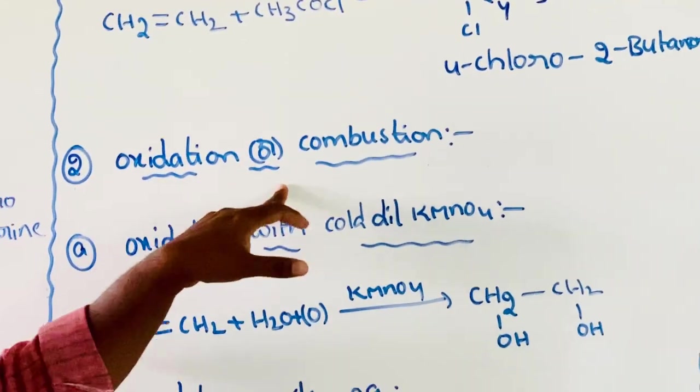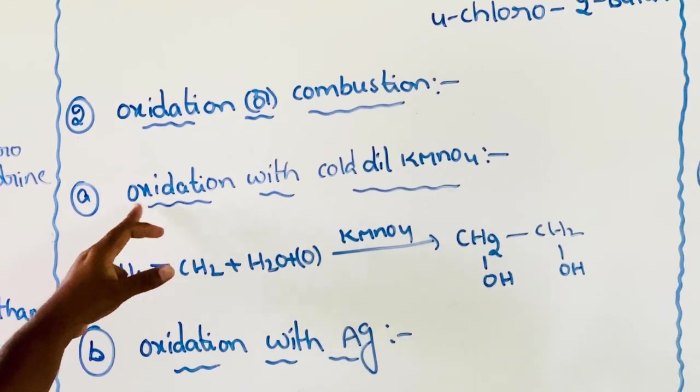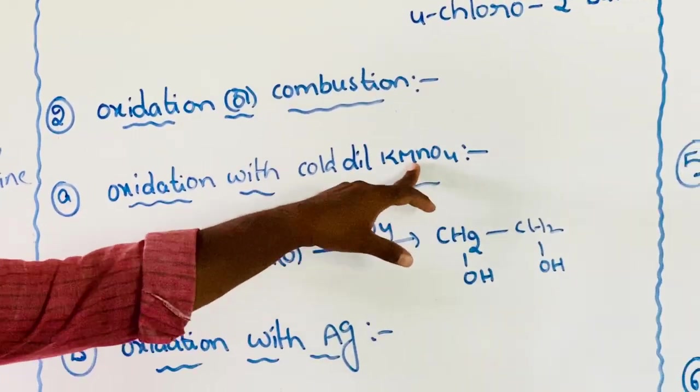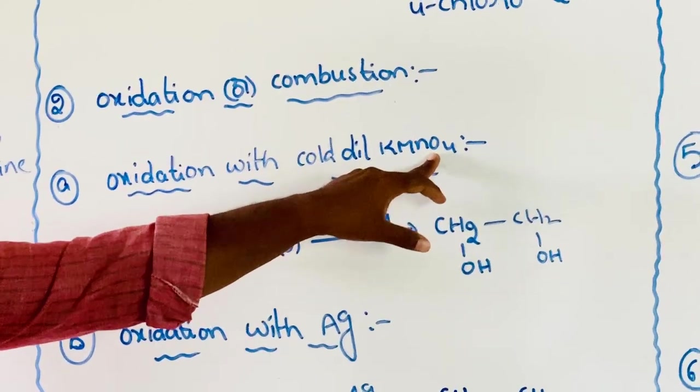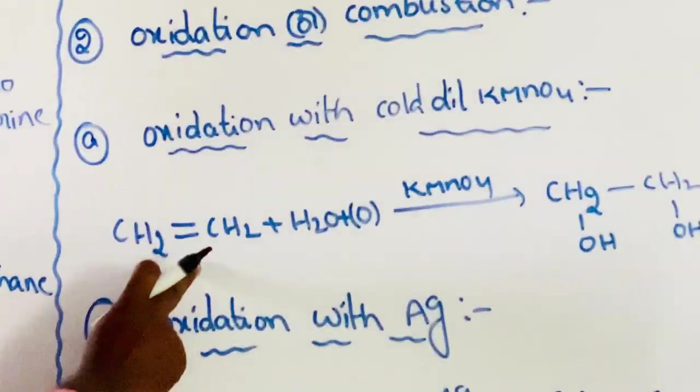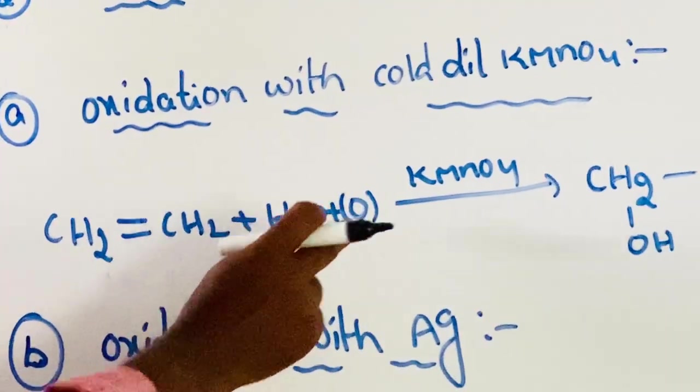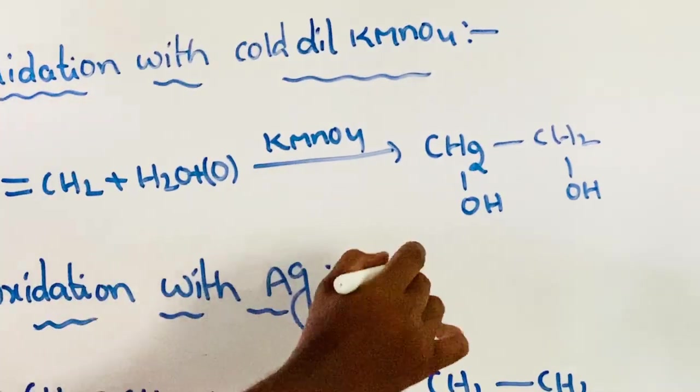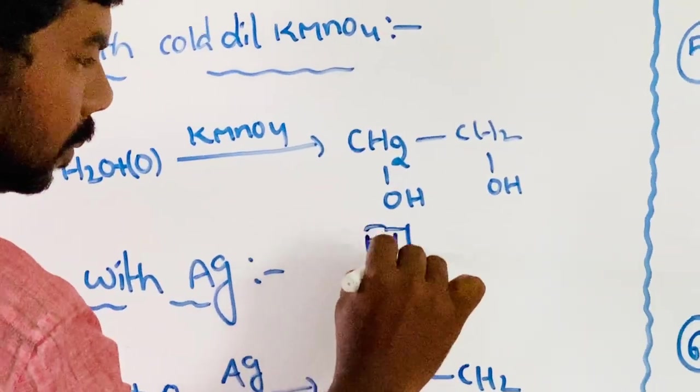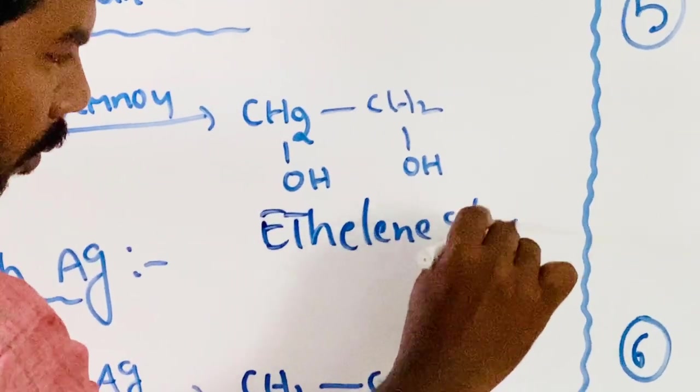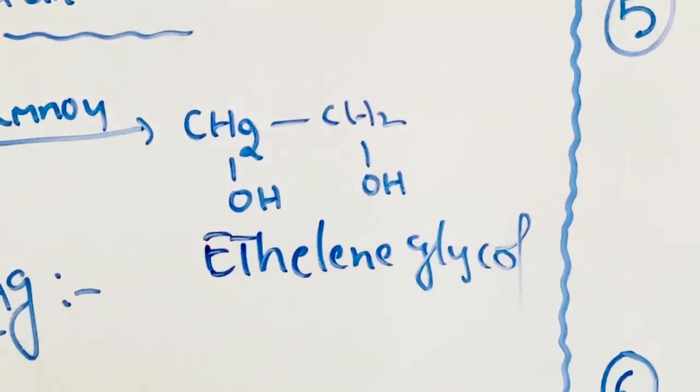Next, oxidation and combustion. First, oxidation with cold dilute potassium permanganate. Potassium permanganate acts as a strong oxidizing agent. Alkenes, that is ethene, on oxidation with cold dilute potassium permanganate give ethylene glycol.